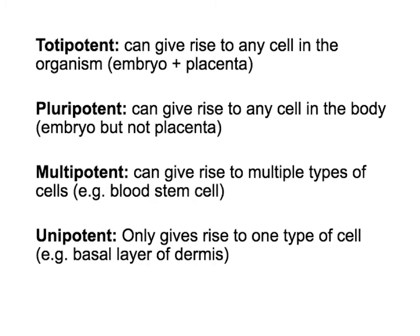So they have limited options. Then we also have cells that are called multipotent. These are cells that can give rise to multiple cell types. An example is blood stem cells — they can give rise to any type of blood cell: white blood cells, red blood cells, different types of white blood cells, but only within that lineage. They cannot become a neuron or a muscle cell. They are limited to that family of cells.